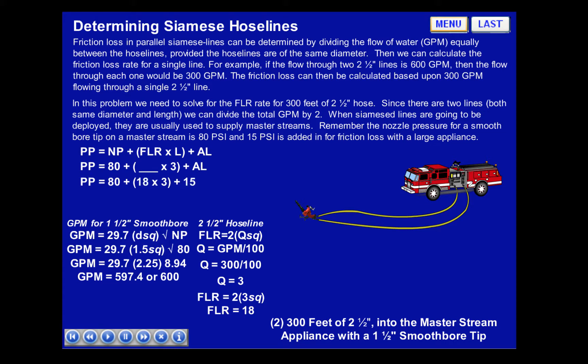Now that we have solved for the friction loss rate for the supply lines, let's put this together. Pump pressure equals 80, the nozzle pressure for a Master Stream smoothbore, plus 18 times 3, the friction loss rate for the hose, plus 15 for appliance loss. Therefore, pump pressure equals 80 plus 54 plus 15, for a total of 149 PSI.